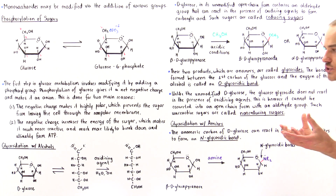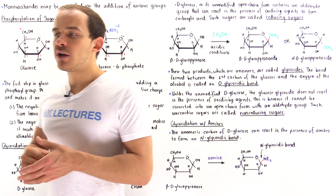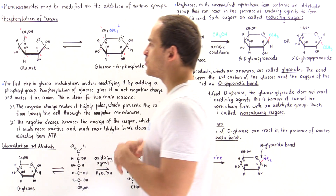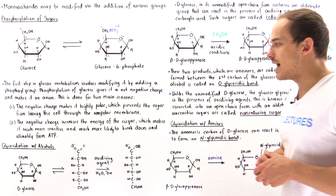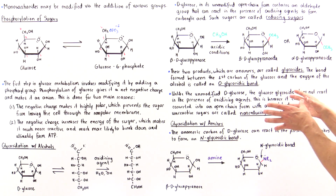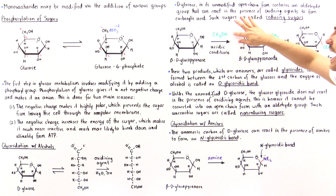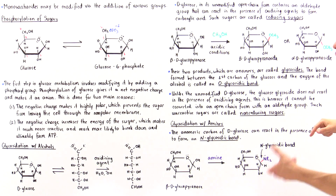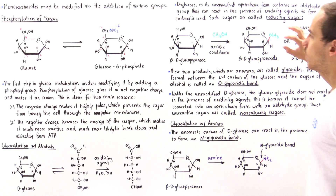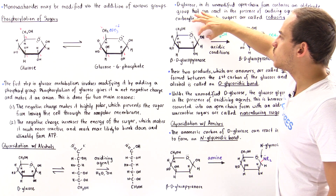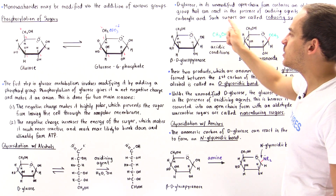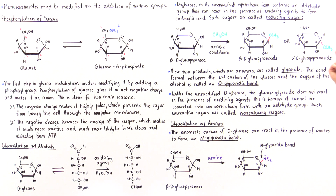Under certain circumstances, our cells don't want this reaction to take place. What our cells do is remove that aldehyde group by reacting it in a process called glycosidation, which transforms that glucose molecule into a glycoside. This can occur in the presence of alcohol — for example, methanol — under acidic conditions, such as HCl. The hydrochloric acid protonates the hydroxyl group, which departs forming a carbocation intermediate. The methanol then acts as a nucleophile attacking from the top or bottom side, ultimately forming a mixture of two products known as glycosides.